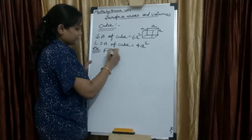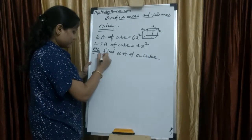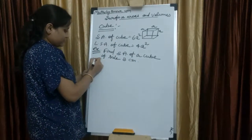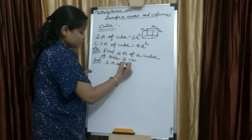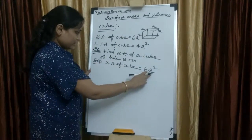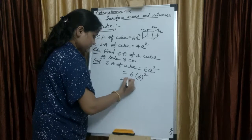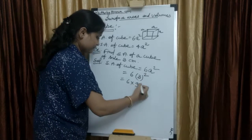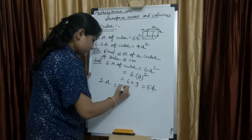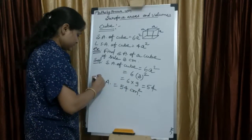Find the surface area of a cube of side 3 cm. Solution: surface area of cube = 6a². Here a = 3 cm, so it equals 6 × 3² = 6 × 9 = 54. Therefore, the surface area of the cube equals 54 cm².